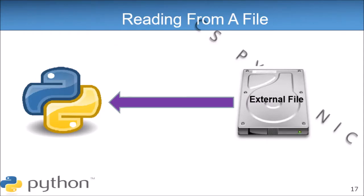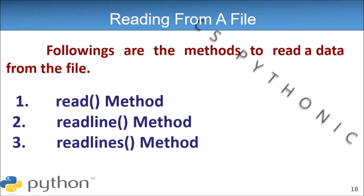If your data is on your hard disk and you want to read that particular data in Python, you have three functions - three methods - for reading. The first method is the read method, second is the readline method, and third is the readlines method. The difference between these three is what gets asked in your paper: what is the difference between read, readline, and readlines?